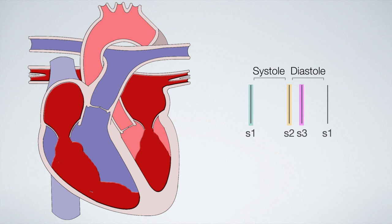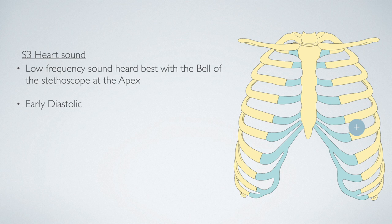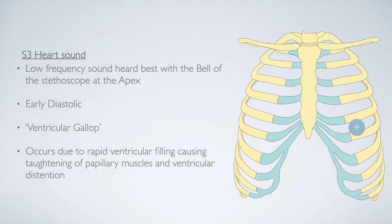The S3 heart sound is a low frequency sound heard best with the bell of the stethoscope at the apex of the heart. It is heard in early diastole and is often referred to as a ventricular gallop. It is caused by rapid ventricular filling which distends the ventricle and tautens papillary muscles. The S3 heart sound is a physiological occurrence and can normally be heard in children and in young healthy adults below the age of 30.